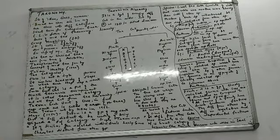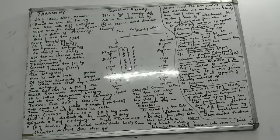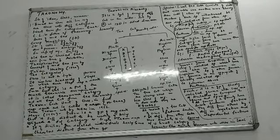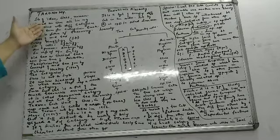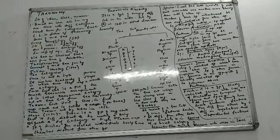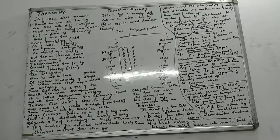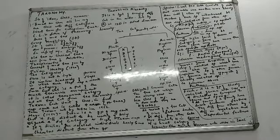Carolus Linnaeus is considered the father of taxonomy. Now what is the basis of modern taxonomy? In taxonomy we are identifying, classifying, and naming — identification, classification, and nomenclature. So there should be some basis for this process.